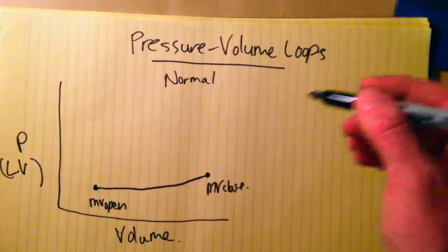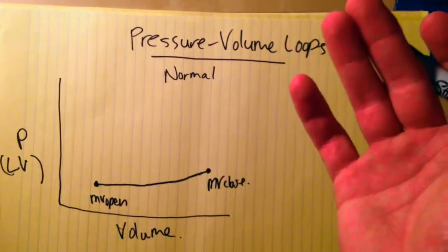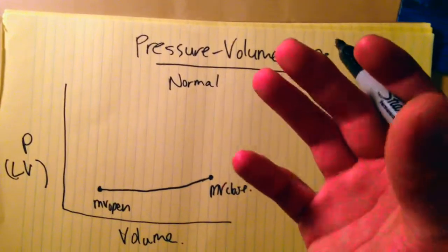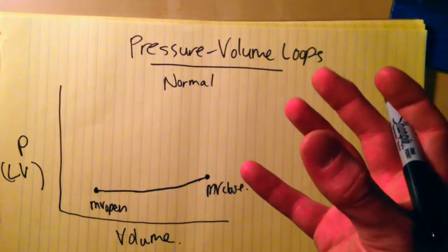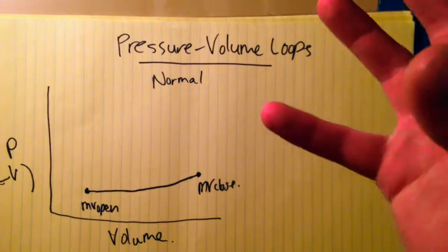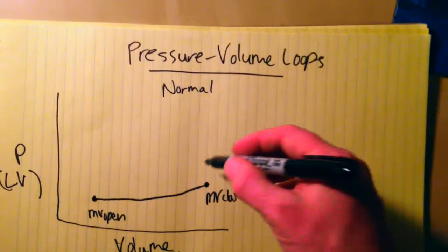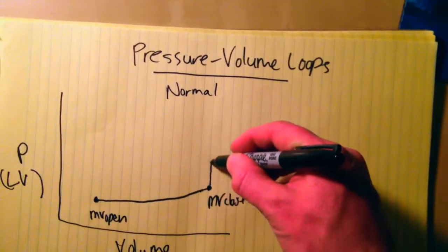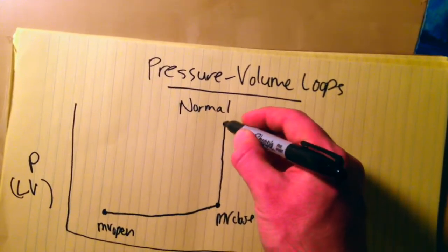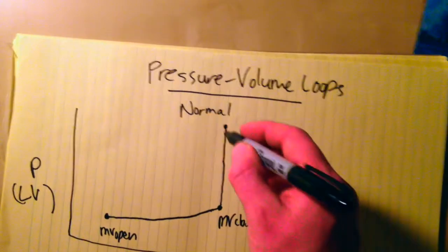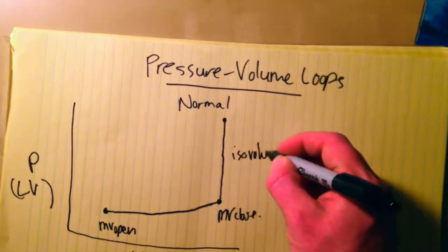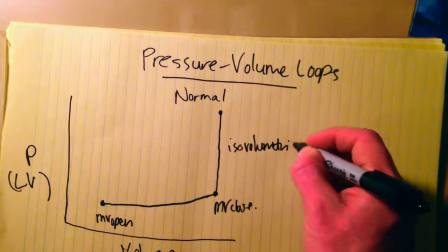The volume of the ventricle when both valves are closed is not changing. You get an increase in pressure as the ventricle contracts. You can imagine a fixed space - pressure inside getting greater as whatever's inside is squeezed. So you get a period of what's called isovolumetric contraction.